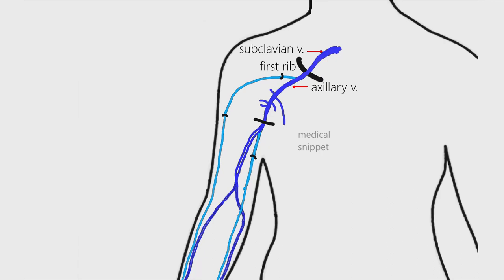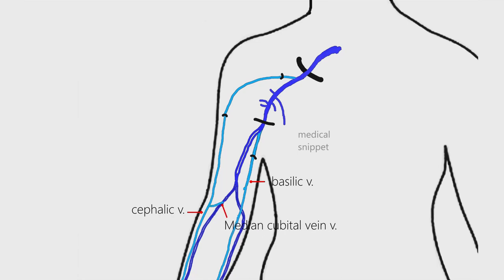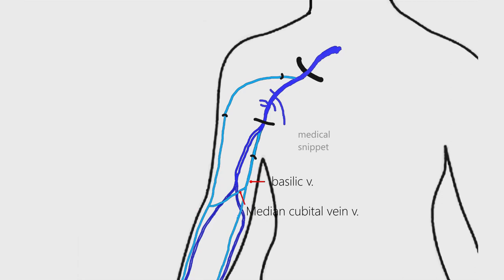The median cubital vein is a large communicating vein; it drains blood from the cephalic to the basilic vein. It starts from the cephalic vein below the elbow, runs obliquely and medially, then drains into the basilic vein. It is communicated with the deep veins via a perforator vein. This perforator vein fixes the median cubital vein, making it ideal for intravenous injections.